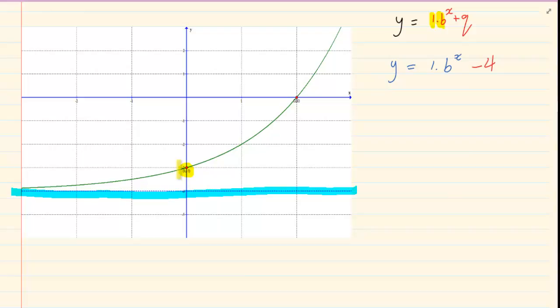And as long as it's to the power of 0, it will be 1. So you must make sure that you don't substitute the y intercept. You must always substitute any other point. So we're going to substitute 2 and 0. So we'd have 0 equals 1 times b to the power of 2 minus 4.